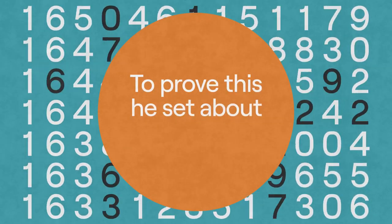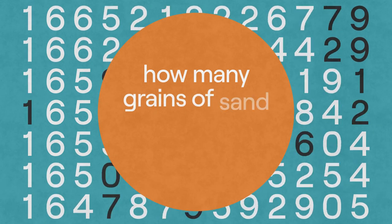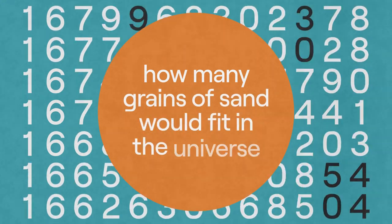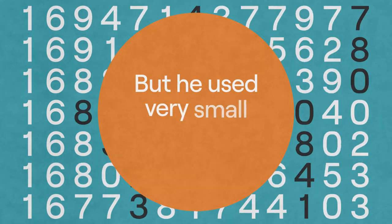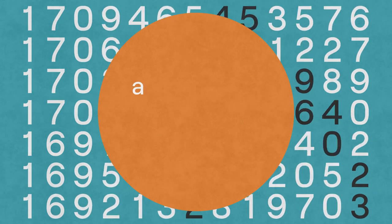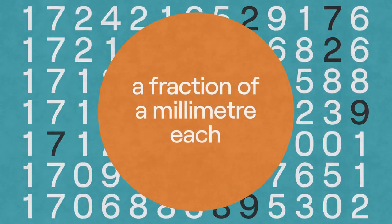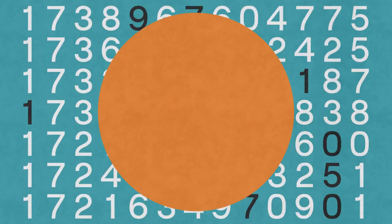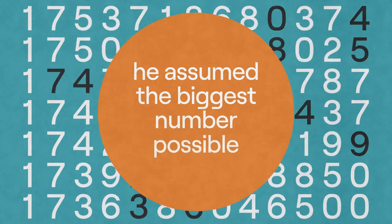To prove this, he set about calculating how many grains of sand would fit in the universe. But he used very small grains of sand, a fraction of a millimeter each. And at every step, he assumed the biggest number possible.